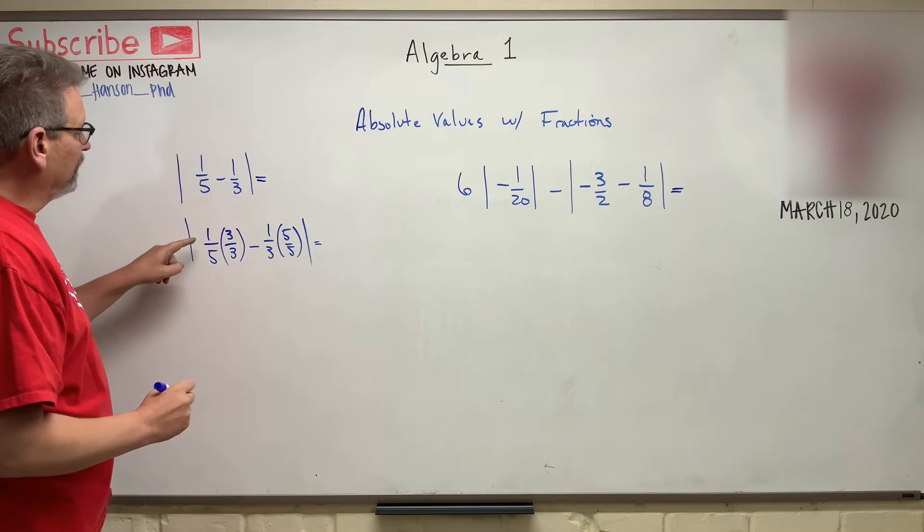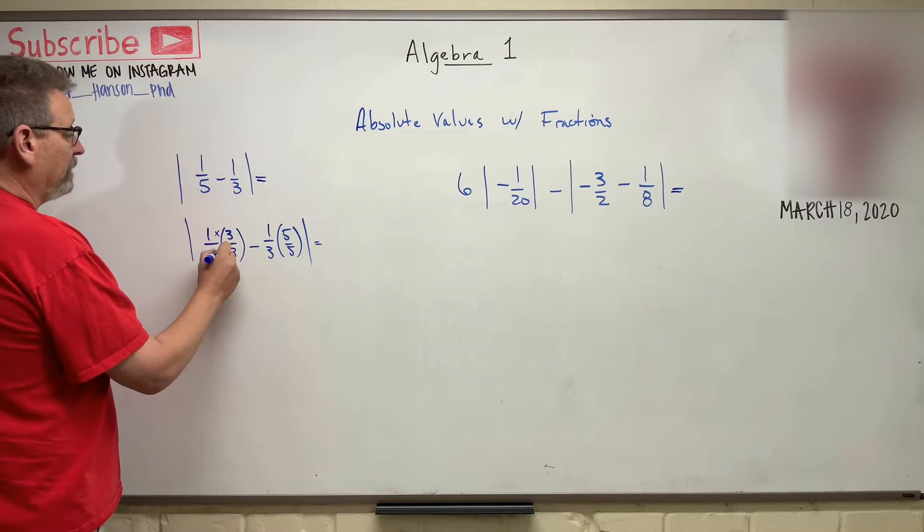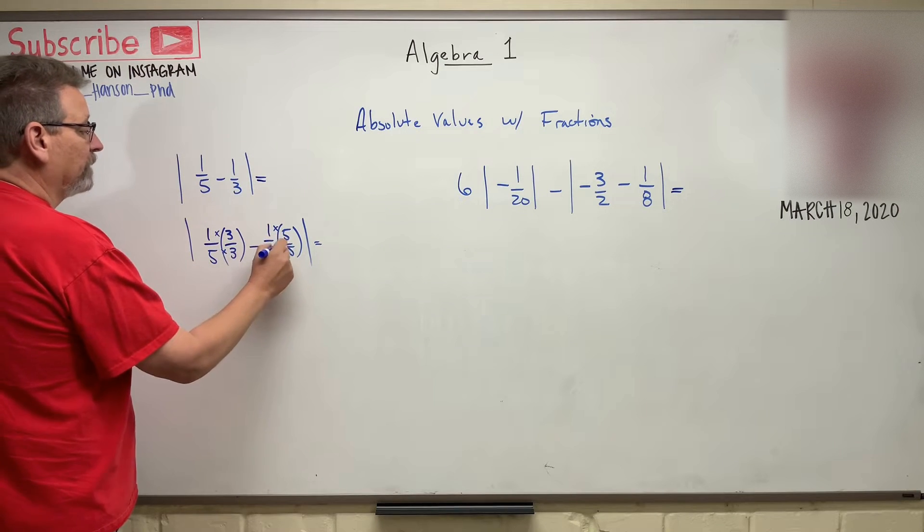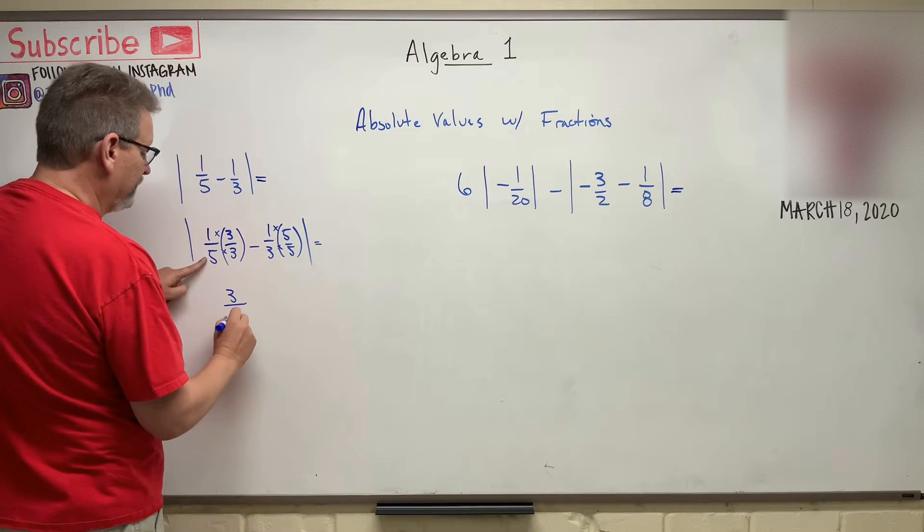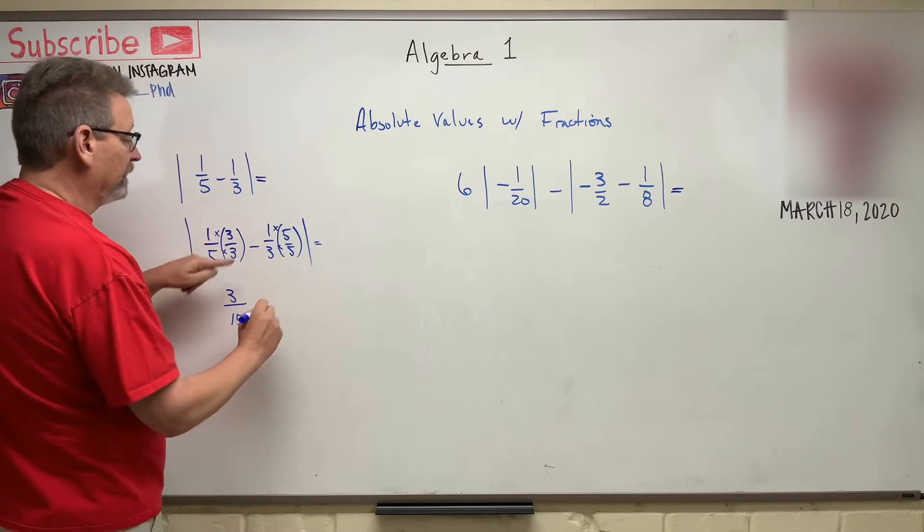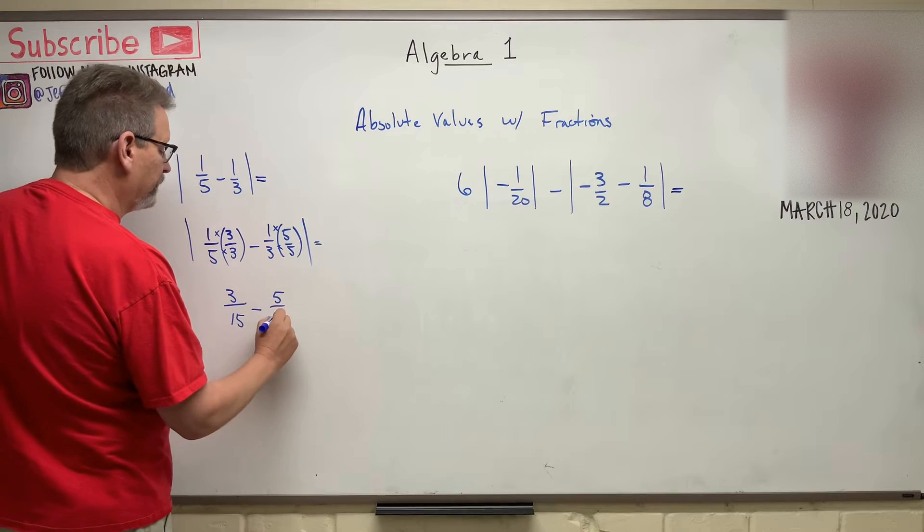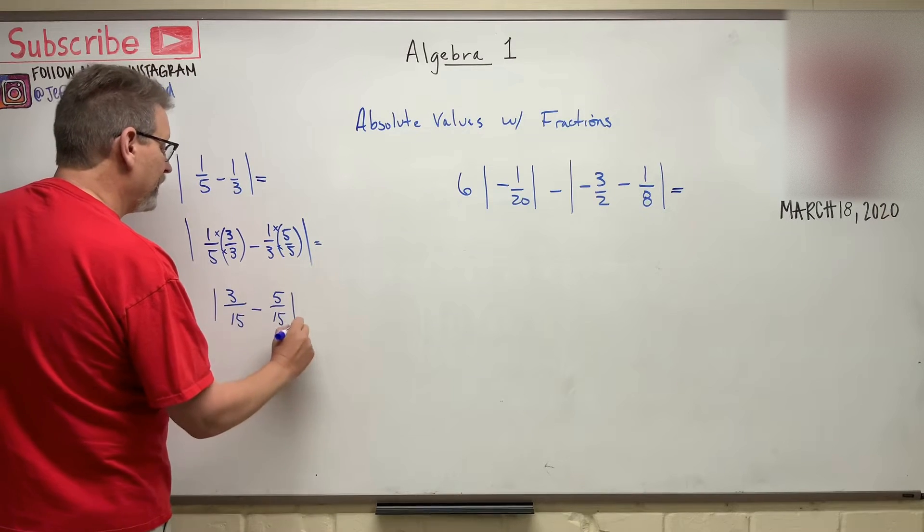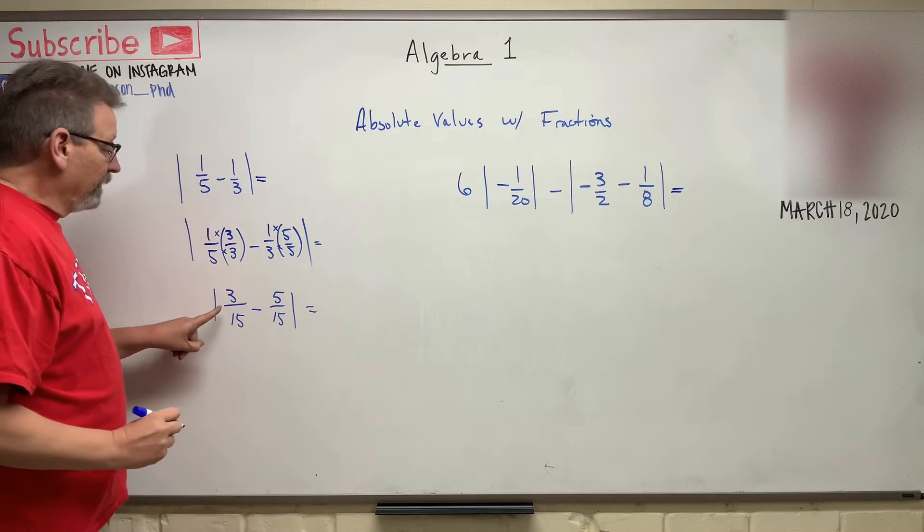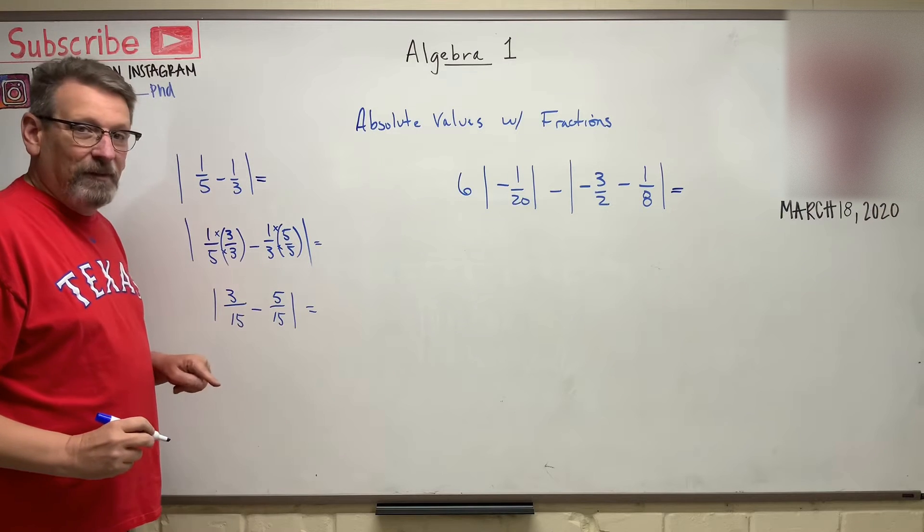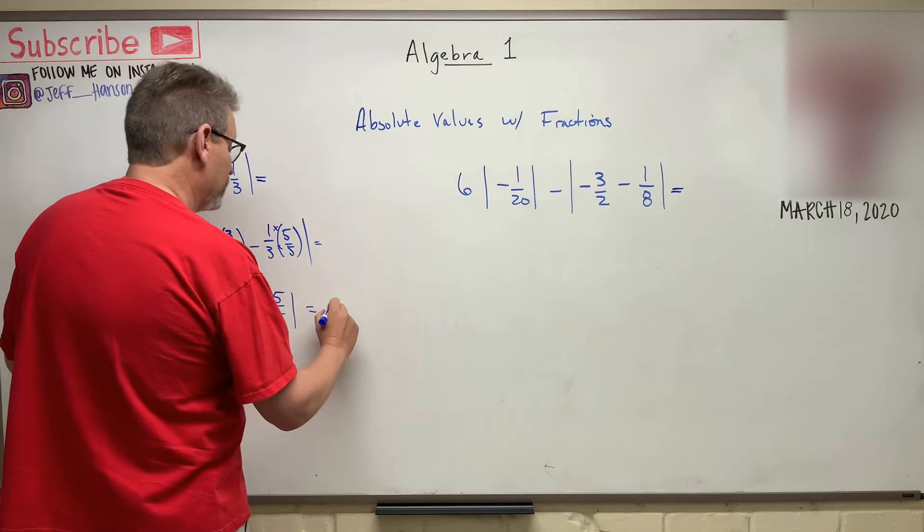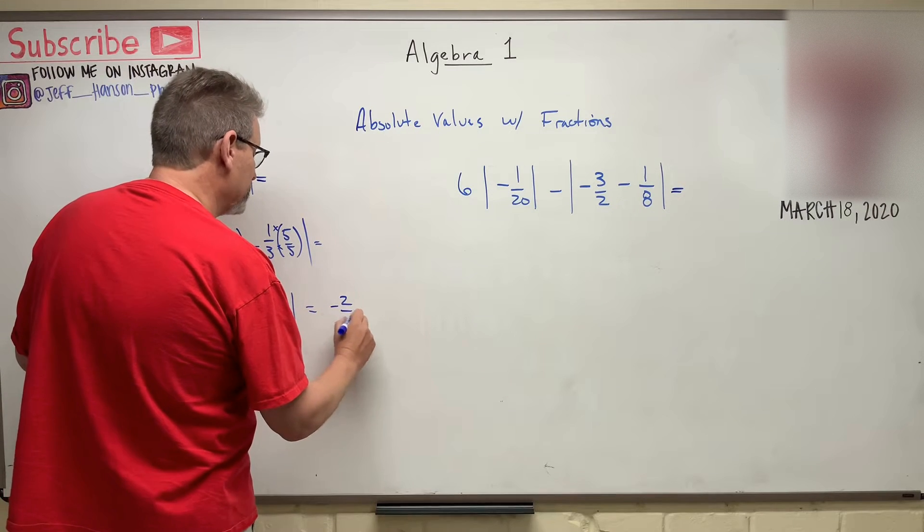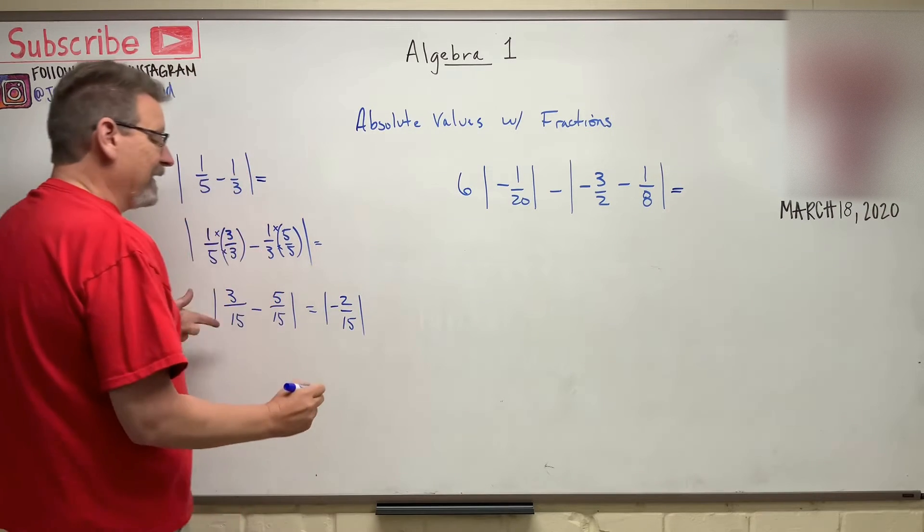Let's see. Remember, top times top, bottom times bottom. So here we go. This is 3 over 15 minus 5 over 15, and then the absolute value of that. 3 minus 5 is how much? Minus 2. So minus 2 over 15.